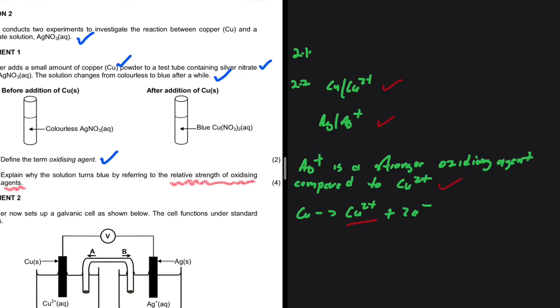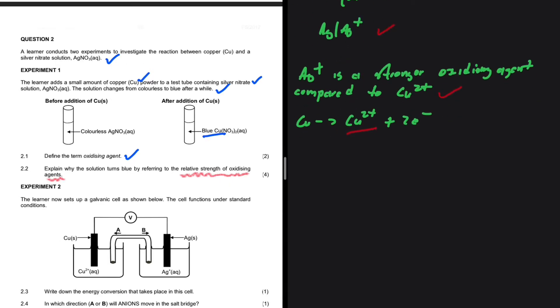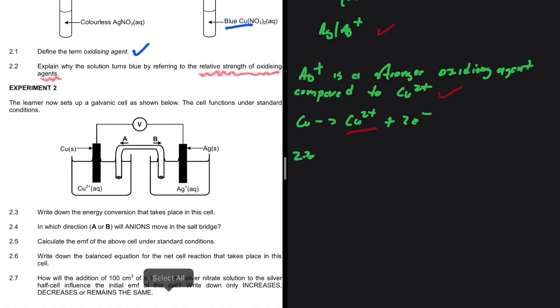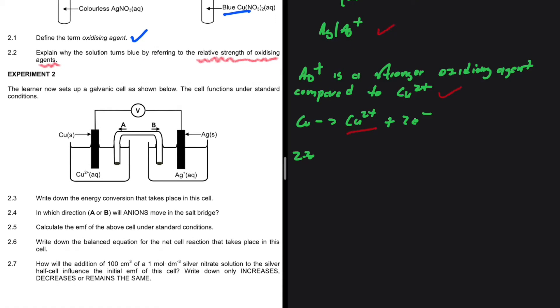Let's take a look at 2.3, experiment two. In experiment two, the learner now sets up a galvanic cell as shown below. The cell functions under standard conditions.